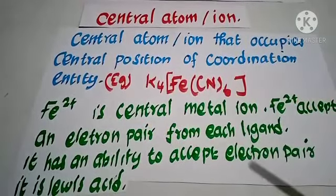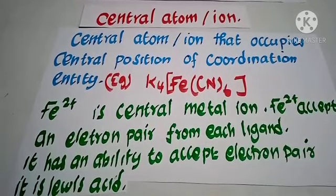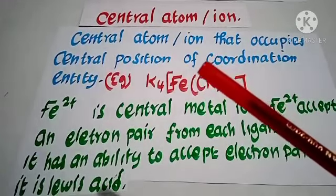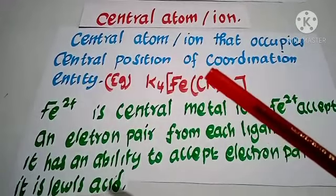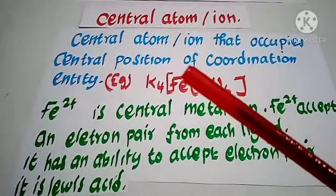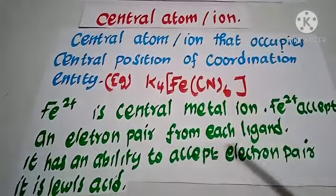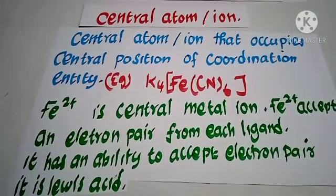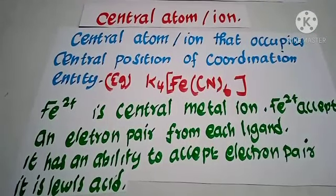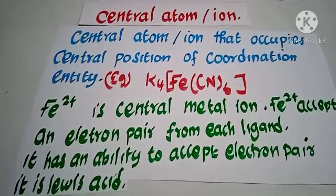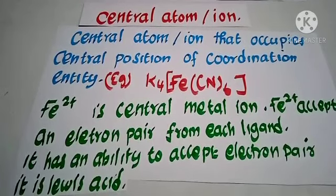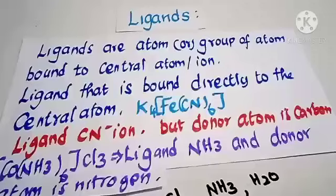The coordination sphere accepts electron pairs from the ligand. The central metal atom has the ability to accept an electron pair from the ligand. Because of this ability to accept electron pairs, the central metal atom is also called a Lewis acid.